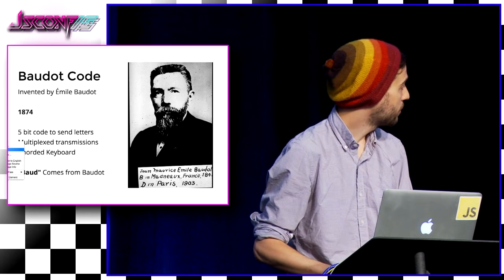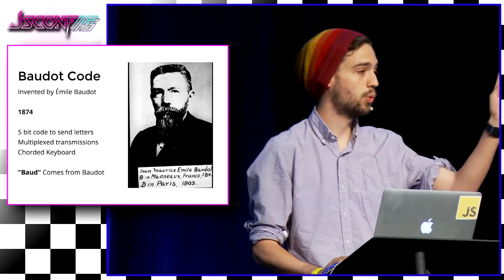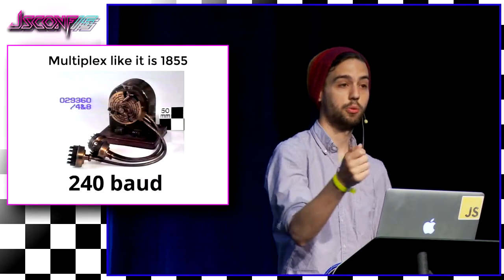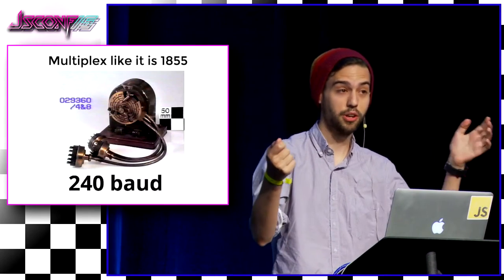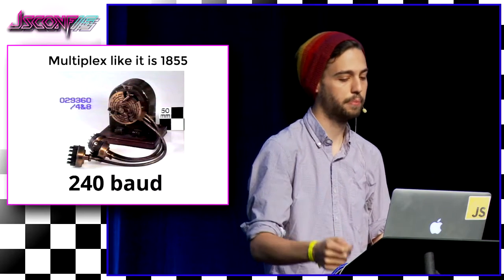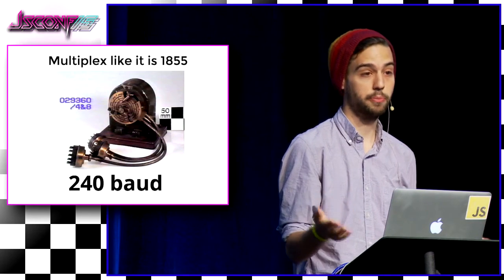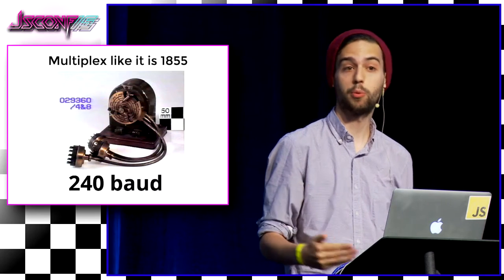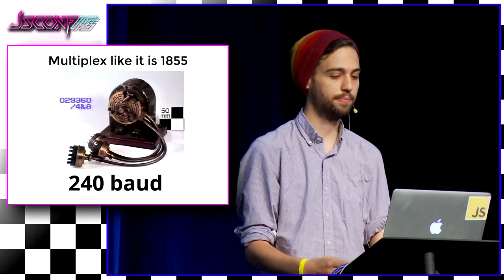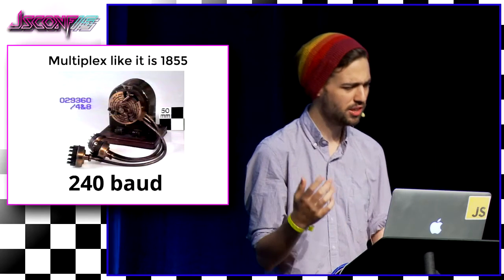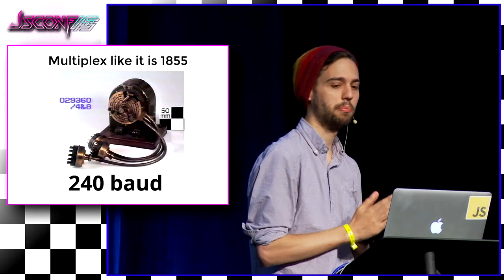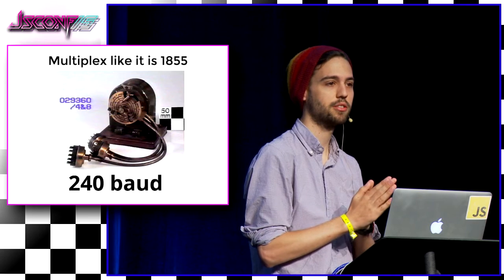Up until this point, we were still using one line for one message. An operator would be on the line, you would be connected to another place through patches or a single wire, and one person could operate at a time. As people wanted to send more and more messages, this didn't scale very well. So Baudot came up with a way to multiplex sending information.